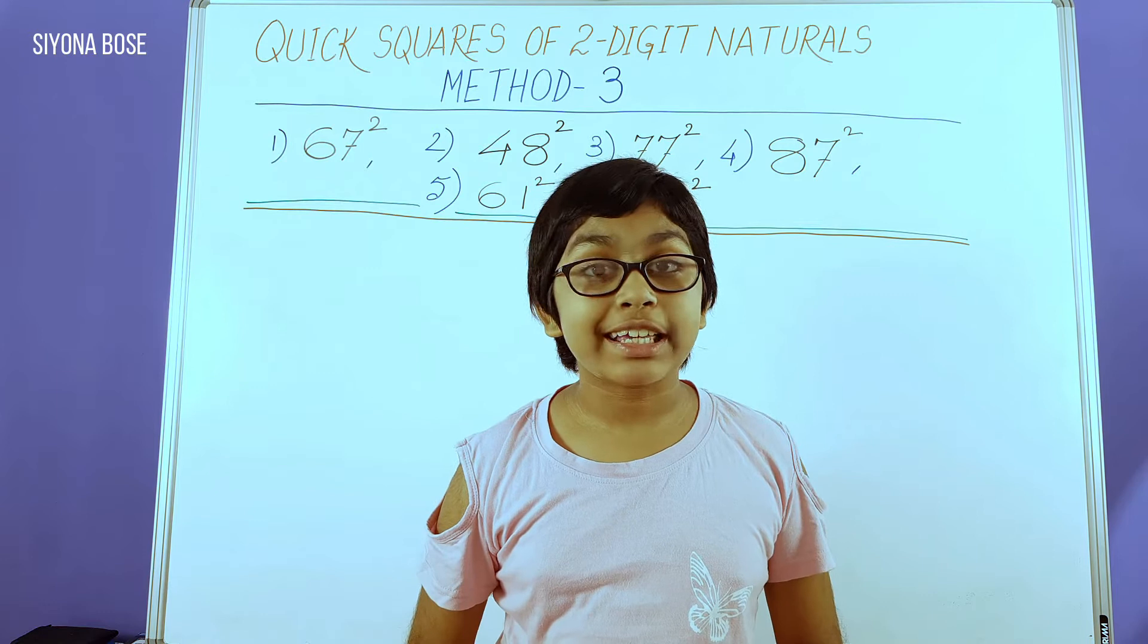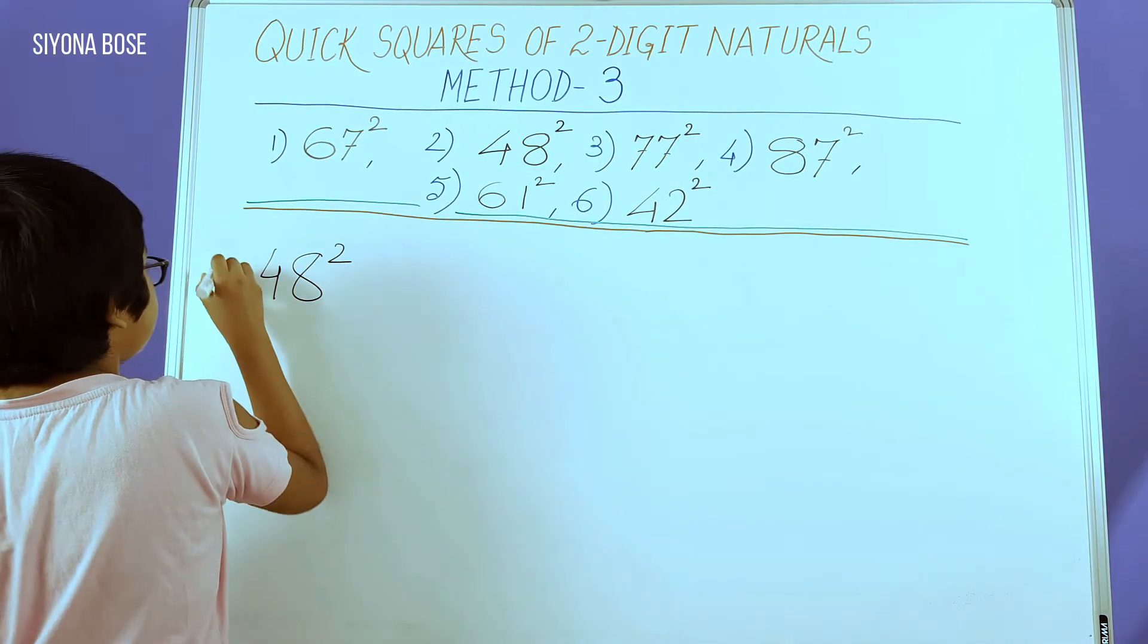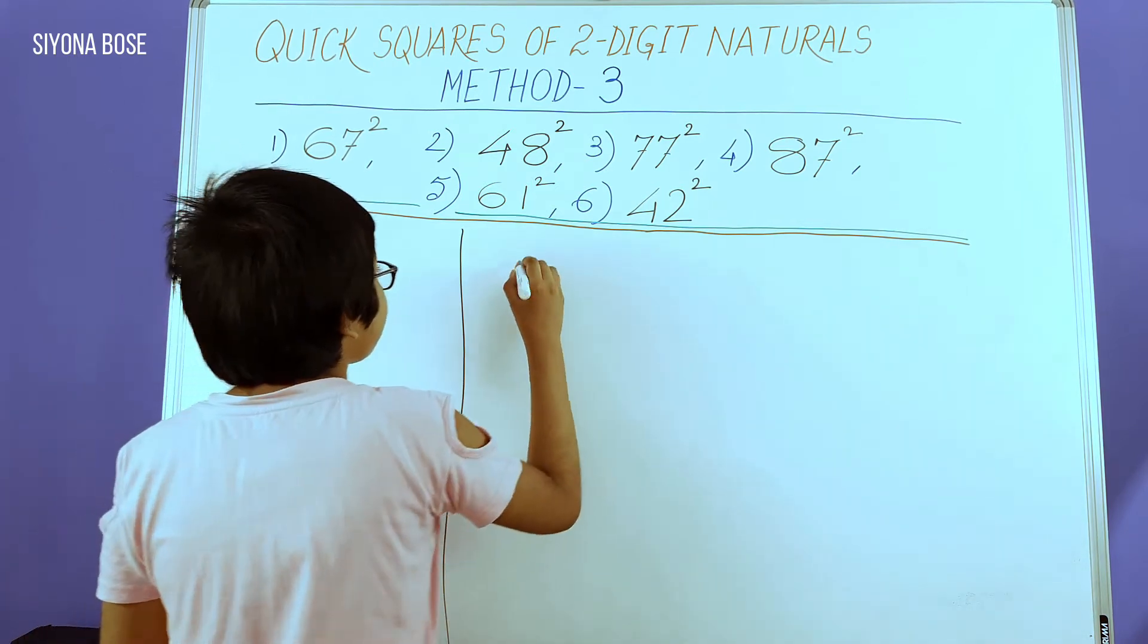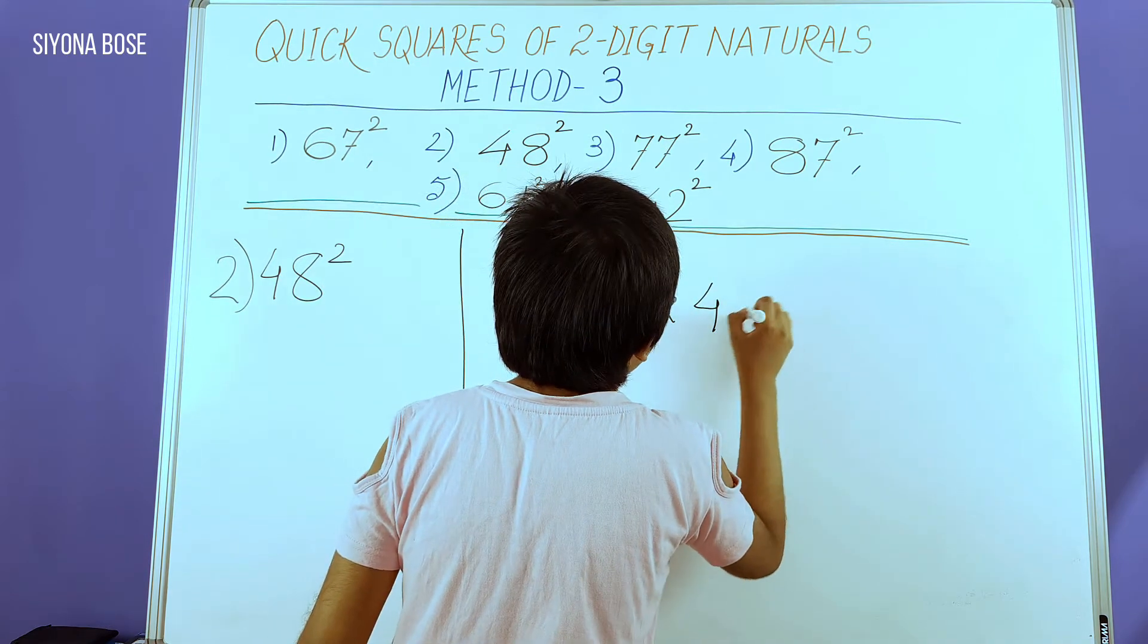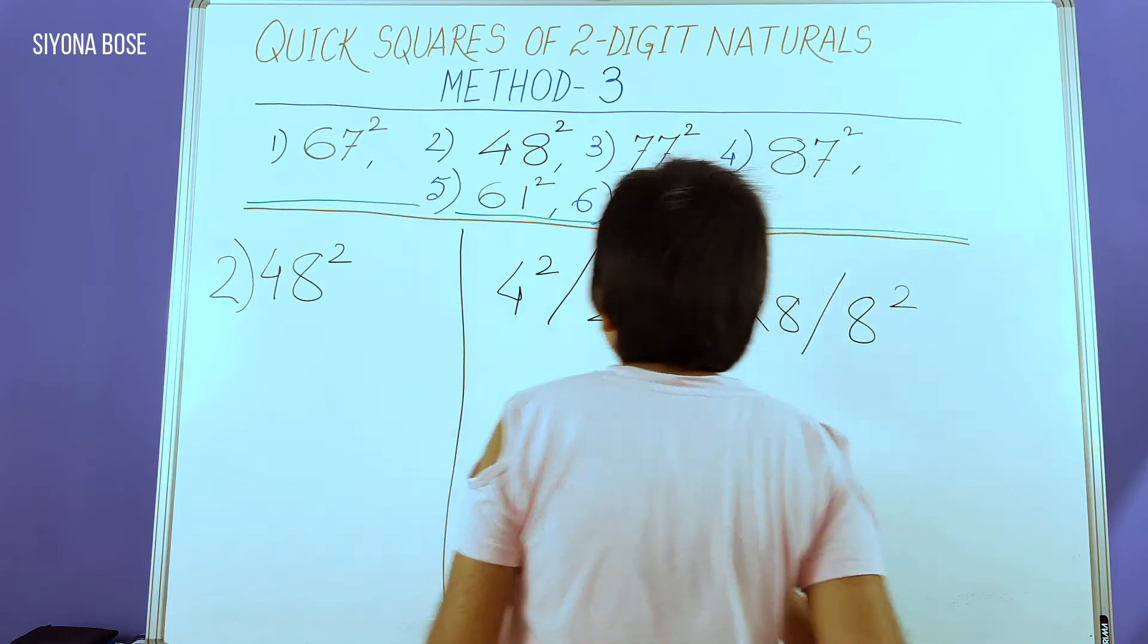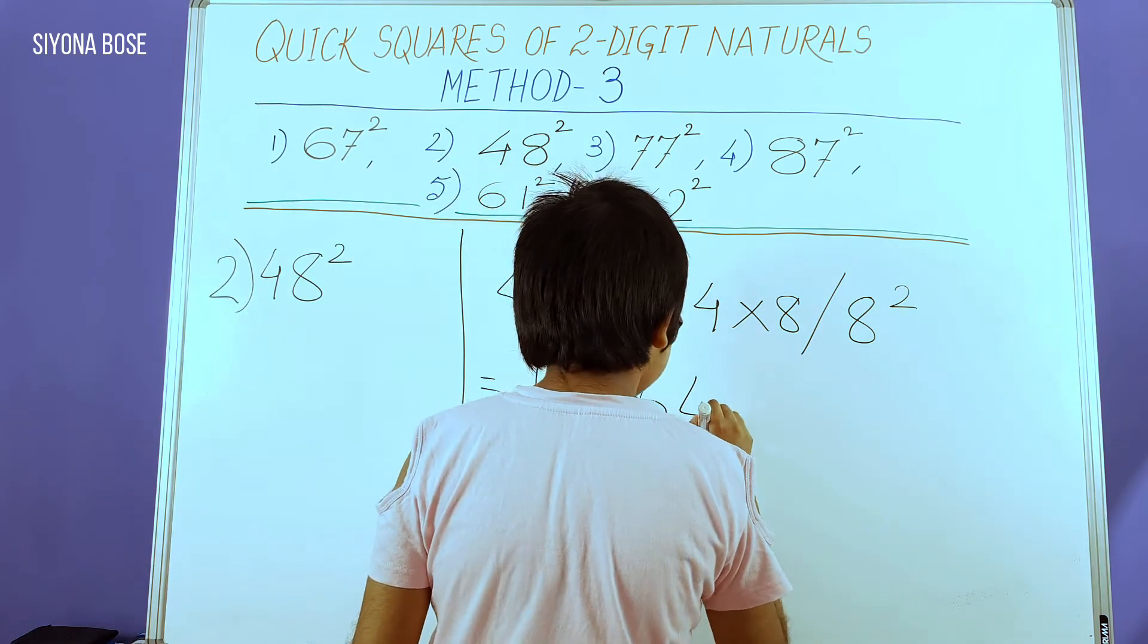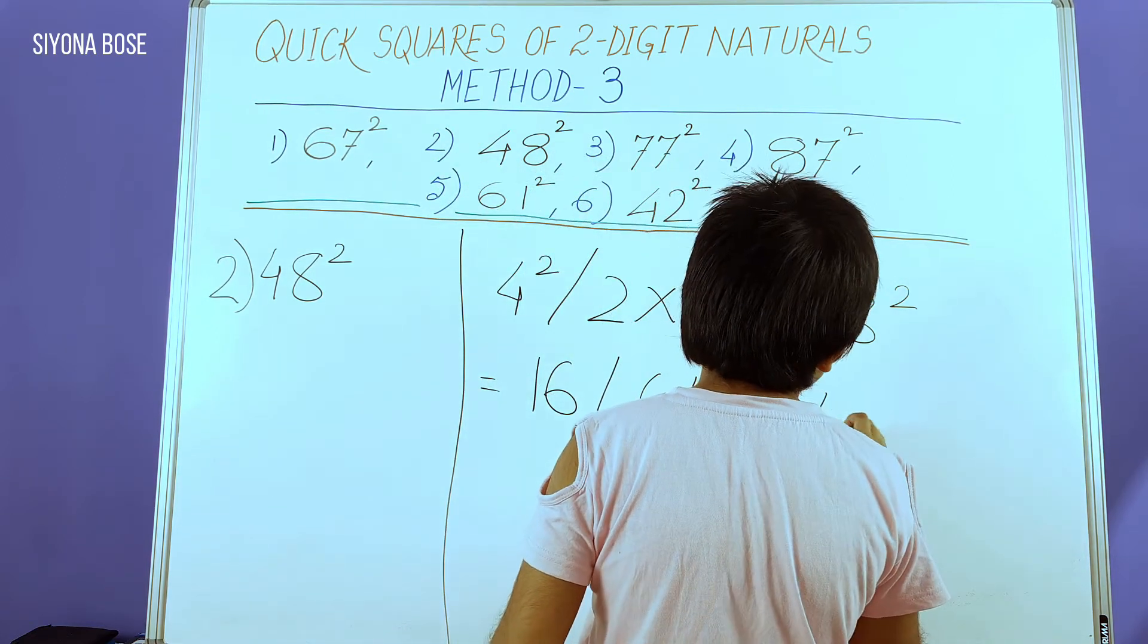Now we can move on to 48 squared. Here again, we need to do the same thing: 4 squared, and since it's a rule, 2 times 4 times 8, and 8 squared. We need to simplify this: 16, 2 times 4 times 8 is 64, and here too we have 64. 8 squared is 64.